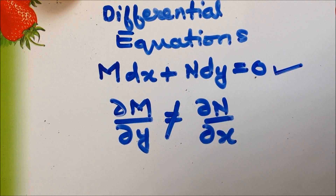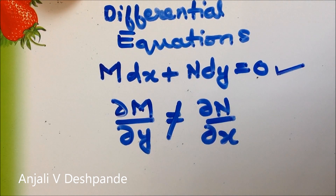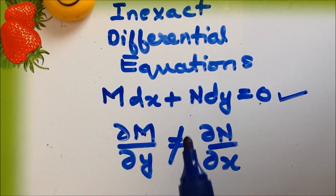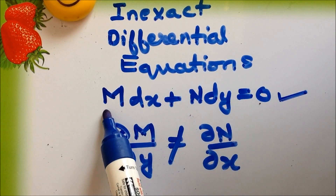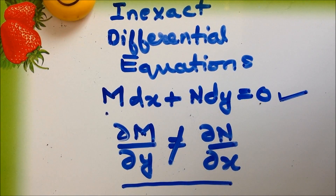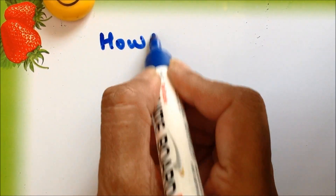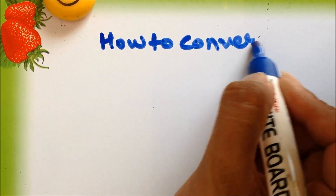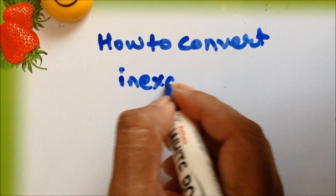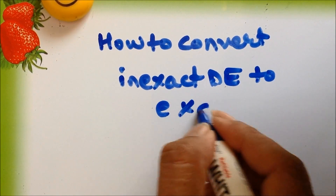In the earlier video, we had discussed about the exact differential equations and how to solve them. In this video, we are going to see what are the rules to convert the inexact differential equation to the exact form, so that this condition will get obeyed. We will now see one by one how to convert the inexact differential equation to the exact differential equation.